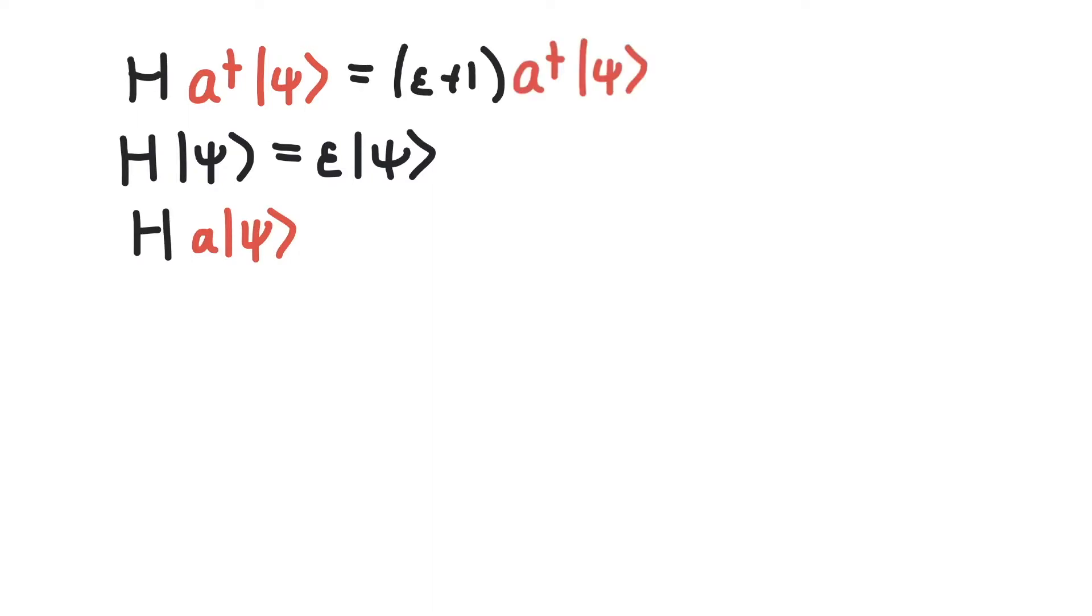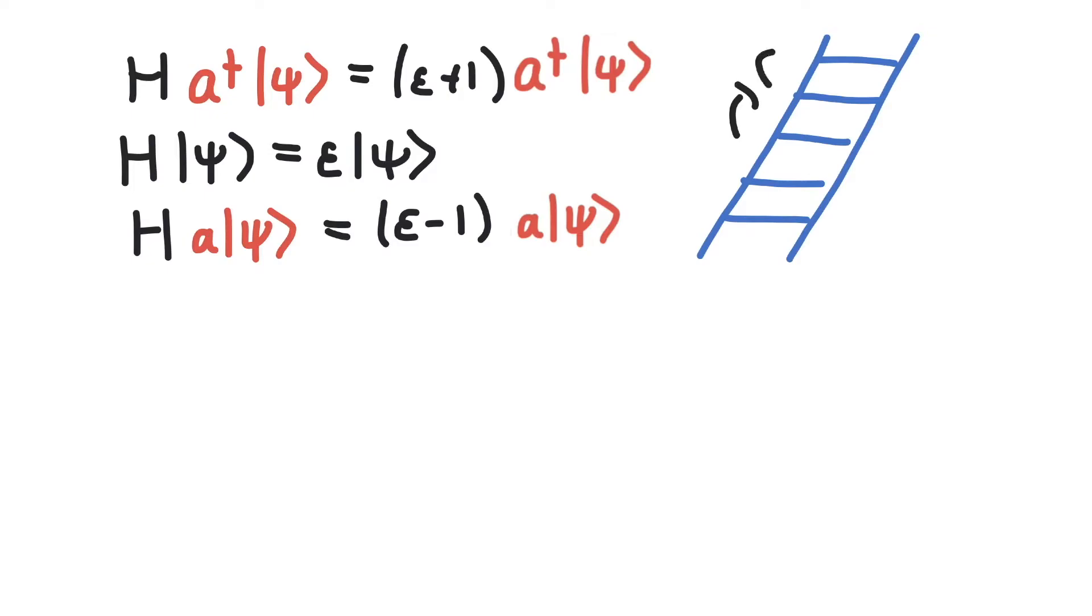Last time we saw that if psi is a solution to the Schrödinger equation with an eigenvalue epsilon, then a dagger psi and a psi are also solutions to the Schrödinger equation, but this time with different eigenvalues, either with raised eigenvalues or with lowered eigenvalues. This is the reason we called them ladder operators, because by applying a and a dagger, we can move up or down a step on this ladder.